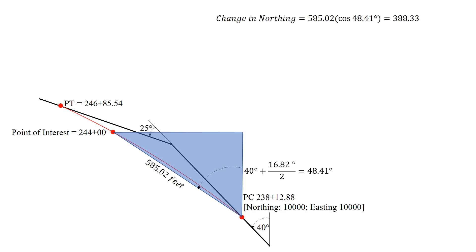So now we're looking for our x, y components here, so the change in northing is 585.02 times the cosine of the angle that we found, 48.41 degrees, and that gives us a change in northing of 388.33. The change in easting, so now we're looking left to right, that x component, 585.02 times the sine of 48.41 degrees, gives us a change in easting of 437.54.